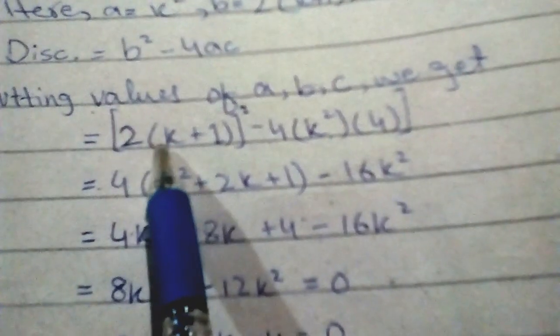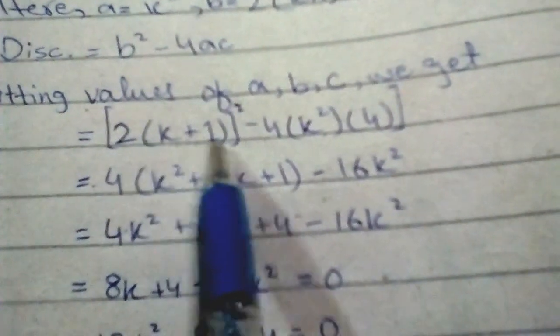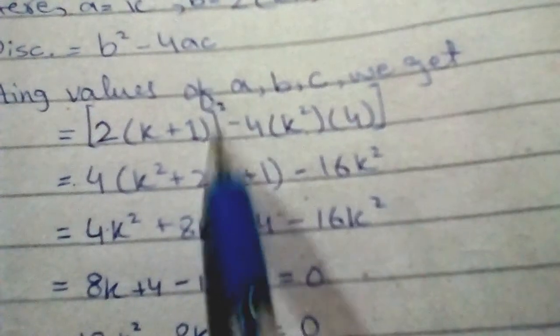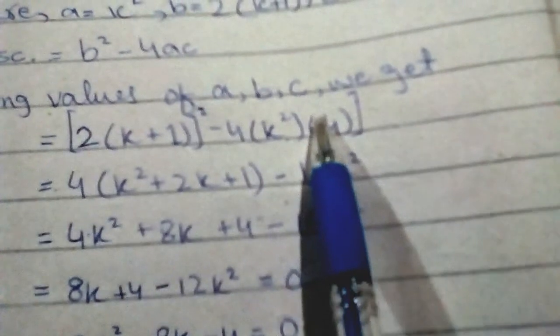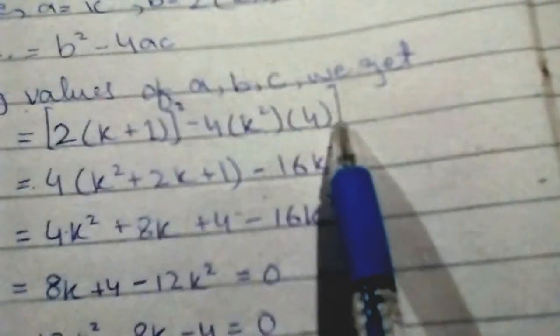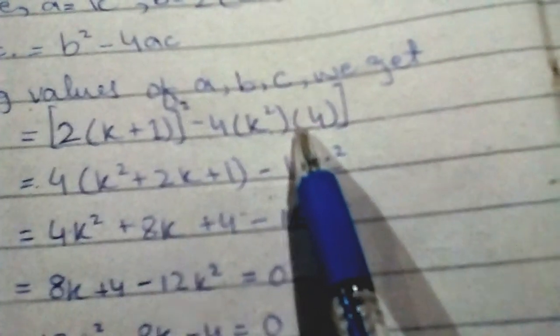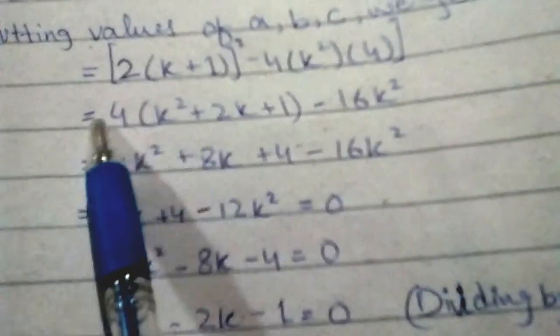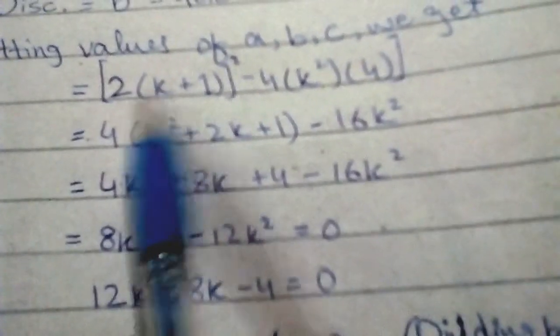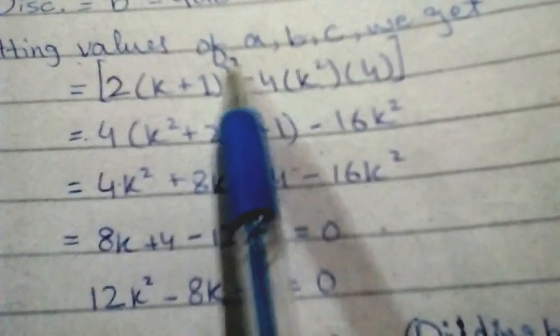Substituting: [2(k+1)]² minus 4 × k² × 4. We now have to open this square bracket.